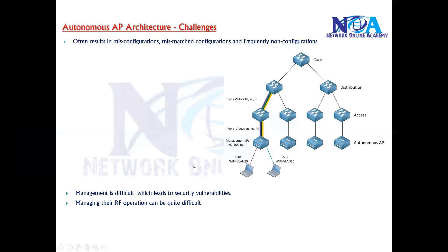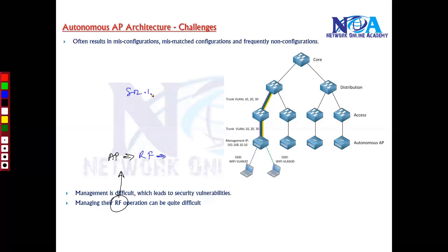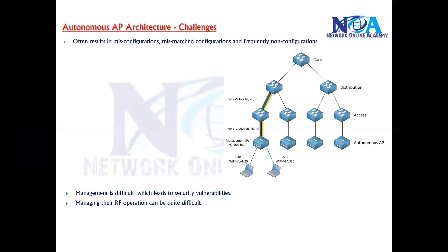Another issue is radio frequency, or RF, signal management. Each and every access point must be set up with specific RF parameters — such as the signal quality, the transmitting power (which depends on your coverage area), and the number of clients you plan to connect. All these RF parameters have to be defined on each and every access point individually, with no centralized option, making it very difficult.